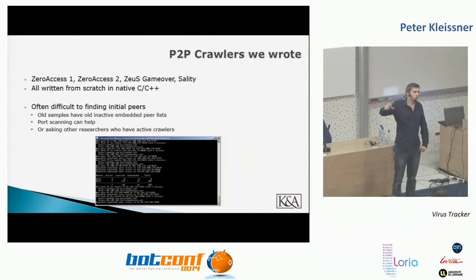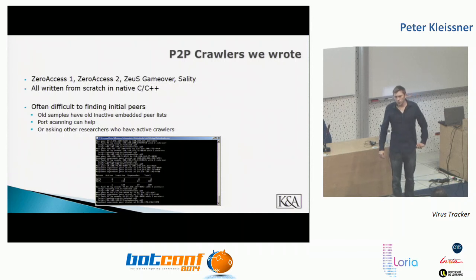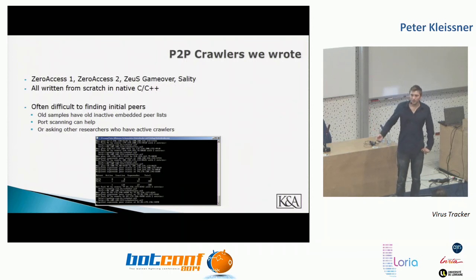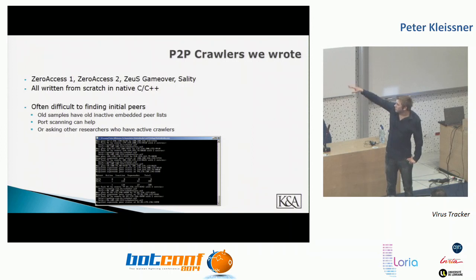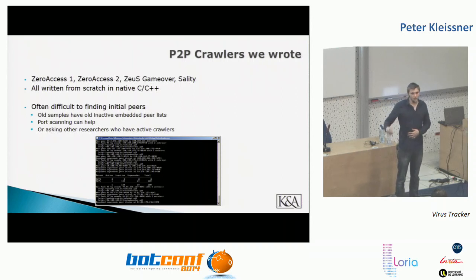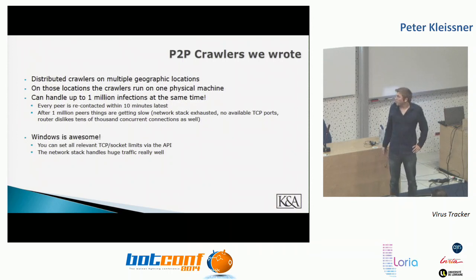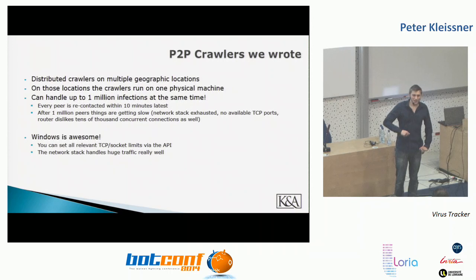To bootstrap into the peer-to-peer network when the hard-coded peer list is dead, you can do port scanning — though we got one server suspended for scanning nearly the entire internet for one open port. Alternatively, you can ask the four or five other people running peer-to-peer crawlers for an initial peer. The crawler constantly re-contacts each peer in the network every 10 minutes asking for neighbors, always enumerating new peers and storing them in the database. We have two crawlers, one in the US and one from my apartment.